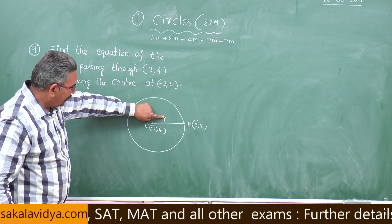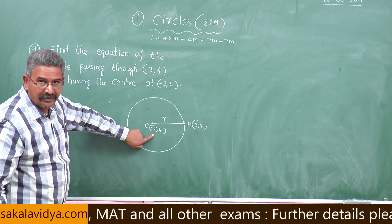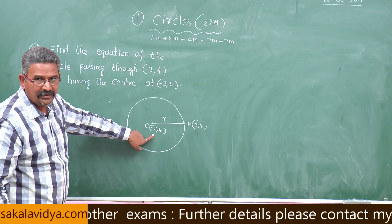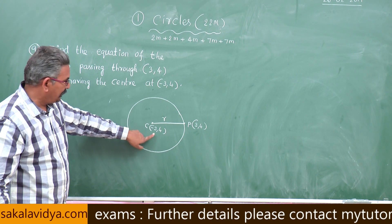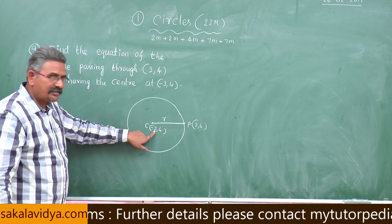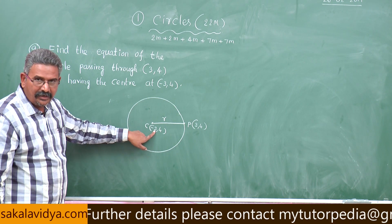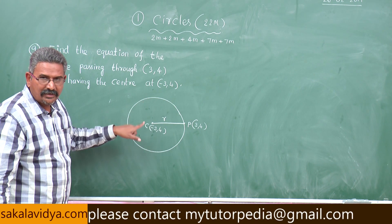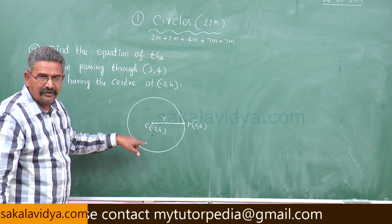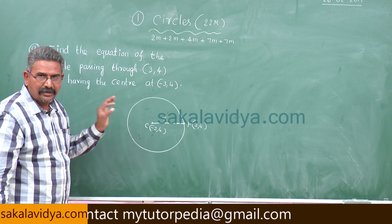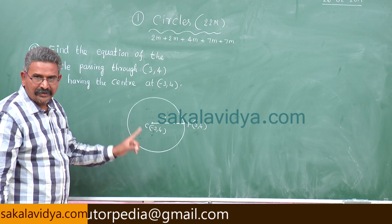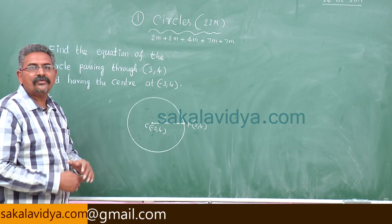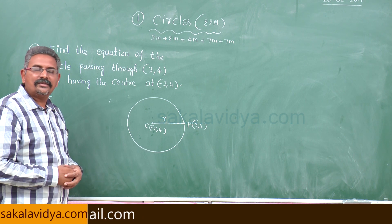As we know the radius and the centre, we can find the equation of the circle. If the centre is h comma k and radius is r, the equation of the circle is given by x minus h whole square plus y minus k whole square is equal to r square.